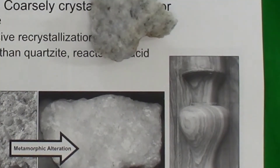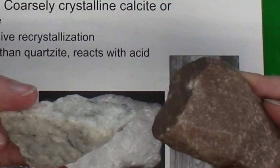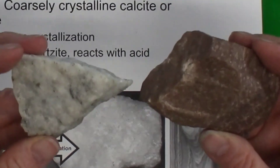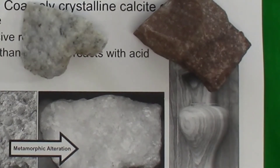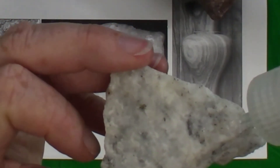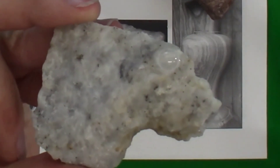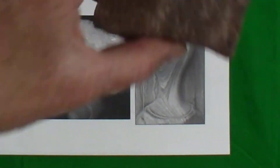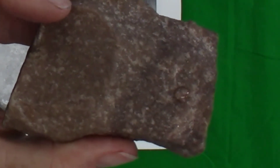Since quartzite and marble are very similar in appearance and both made of predominantly just one mineral, it may be useful to do mineral property tests to distinguish between them. For example, if we're trying to figure out which one is made of calcite, we might do an acid test. We can see the effervescence, which indicates that this is likely a rock made of the mineral calcite. If we try the acid test on the other rock, there's no reaction, indicating it is not calcite.